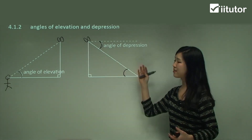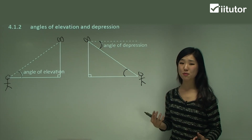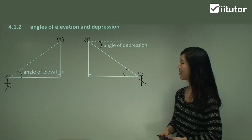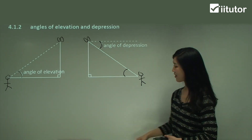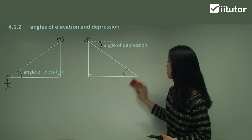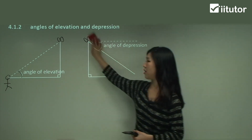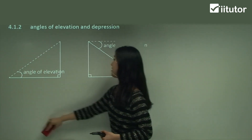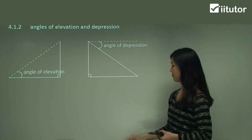With the angle of depression, can you see that this horizontal line and this line here are parallel? These two are both perfectly horizontal lines so they're parallel. Therefore this angle is equal to this angle because they're alternate angles. So the angle of elevation from me to the butterfly is the same as the angle of depression from the butterfly to me — but these are different concepts, so remember them individually.